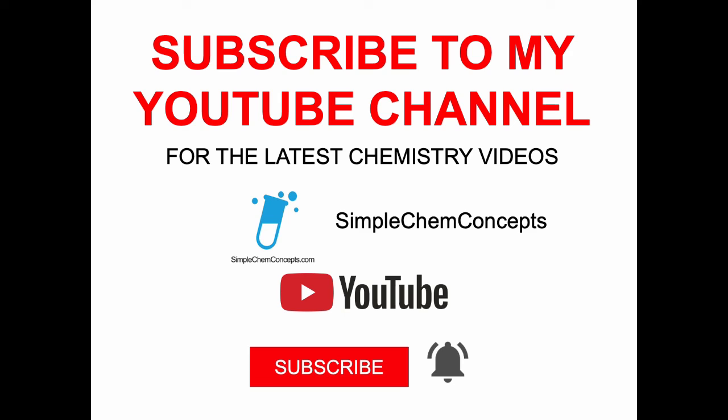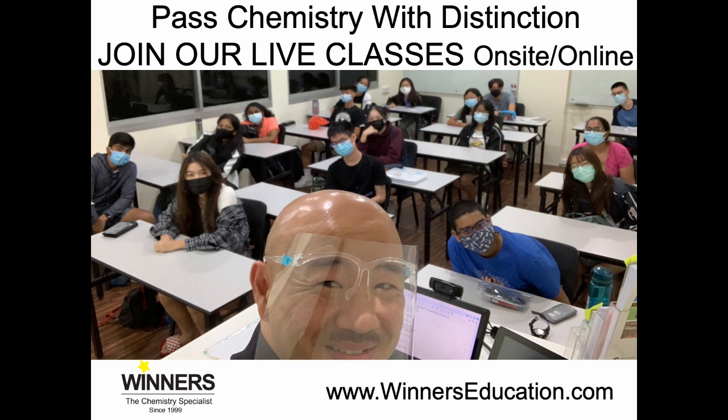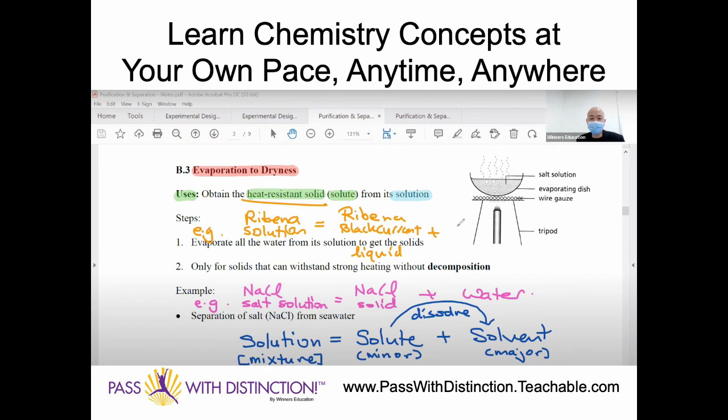If you would like to catch my latest videos, click on subscribe button right now and click on the bell if you want to receive instant notifications once I've uploaded my latest video. If you'd like to join my live chemistry classes and revision workshops, go on to winnerseducation.com and find out how you can score distinction for chemistry on a consistent basis, either in our center or online via Zoom. If you want to check out my online school, go on to passwithdistinction.teachable.com. You'll be able to learn chemistry concepts at your own pace and anywhere in the world, topic by topic. This is Sean Chua from Winners Education to your distinction in chemistry.